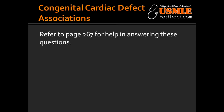What are some of the congenital cardiac defects associated with congenital rubella? Some of the congenital cardiac defects associated with congenital rubella include septal defect, PDA, and pulmonary artery stenosis.